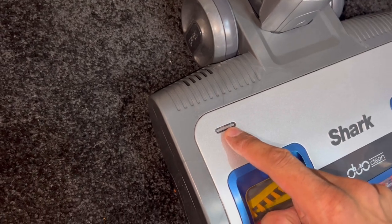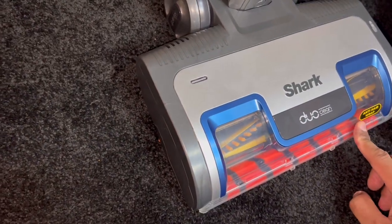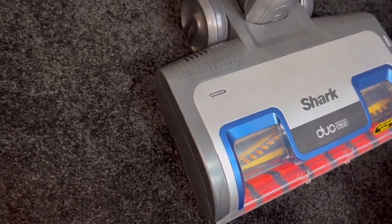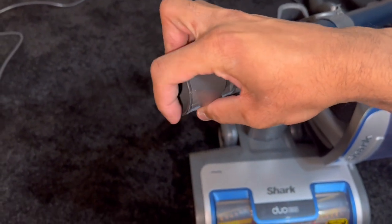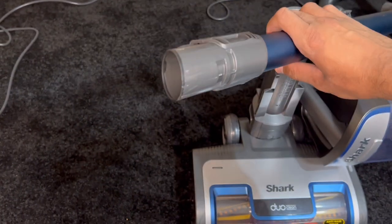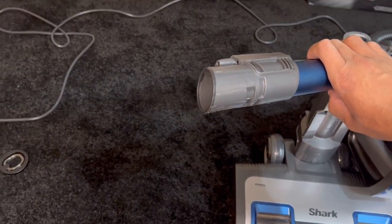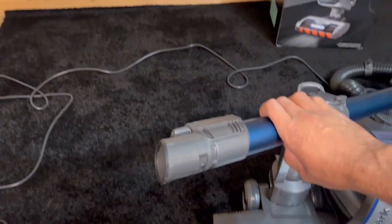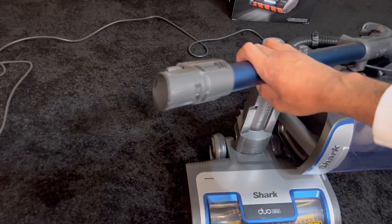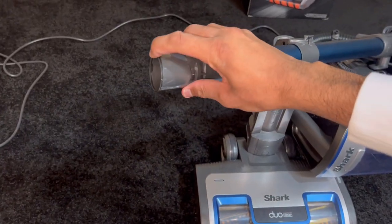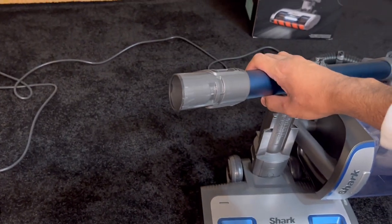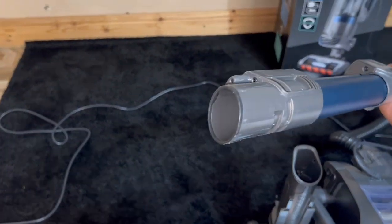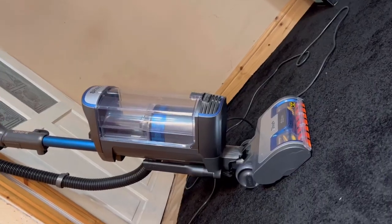For some reason on these larger Sharks, you've got a rubber grip on the end of the wand. So it's not really nice to use without an attachment for quick edge cleaning along your skirting boards on a tile floor, for example. The smaller Sharks, like the NZ801, don't have this, so you can use it without an attachment a lot easier. This just grips onto the surface too much. Look at it. Such an elegant, modern-looking vacuum. I love it. It's beautiful.